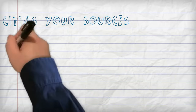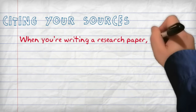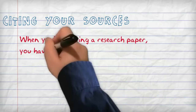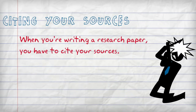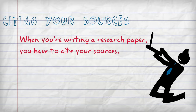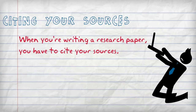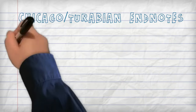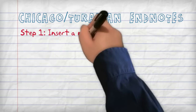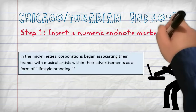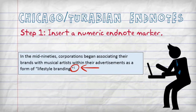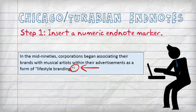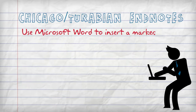When you're writing a research paper, you have to cite your sources. It's not that hard, really. Step 1: Insert a numeric endnote marker within your paper whenever you want to let your reader know you're going to cite a source.